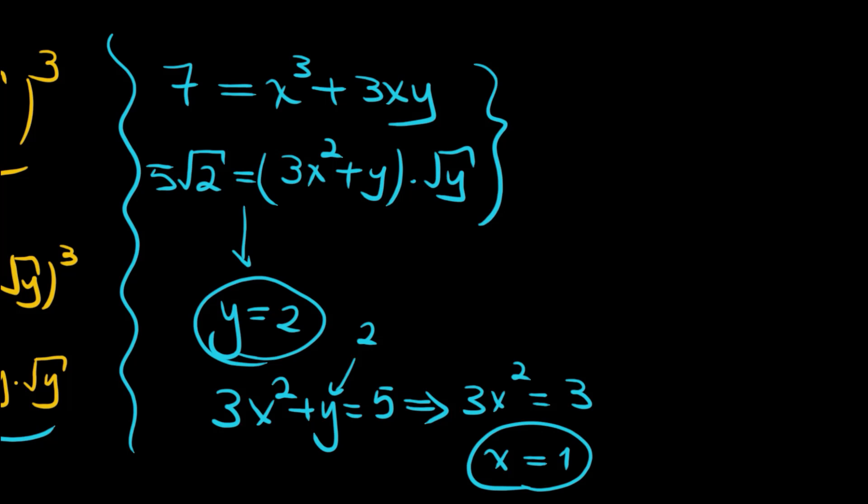Actually, 1 and 2 satisfy the first equation also. Let's check: x cube, I mean 1 cubed, plus 3 times x is 1 and y is 2, equals 1 plus 6 which equals 7. So that satisfies the first equation.